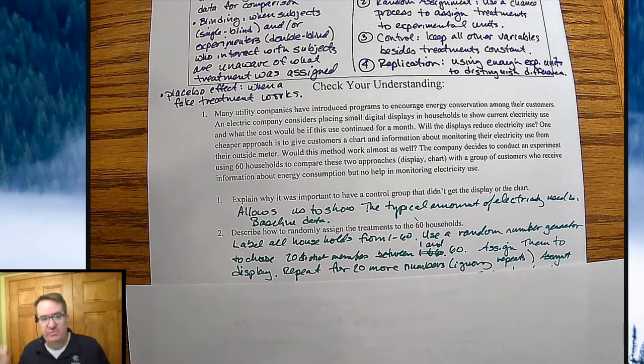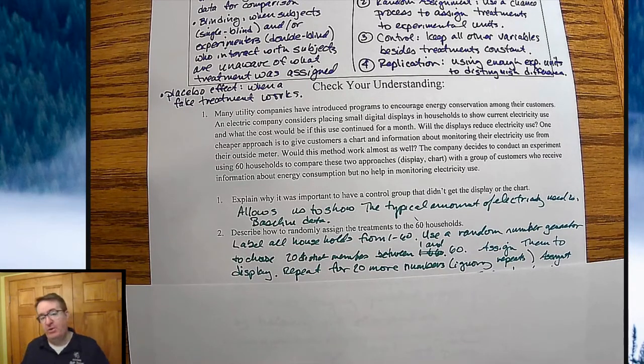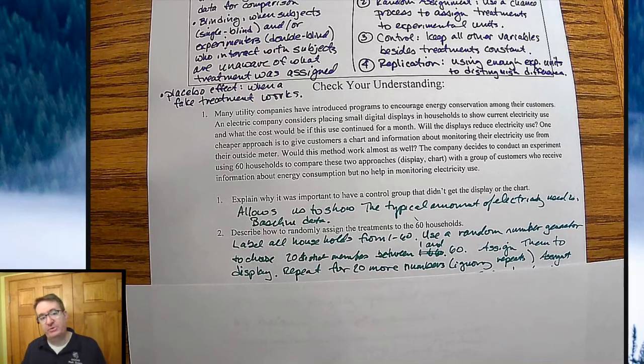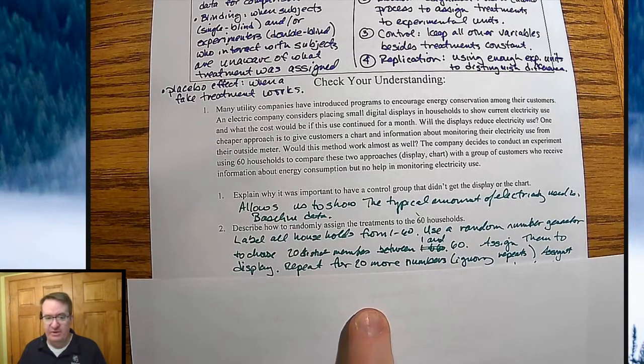The first 20 of those give to the display. Could I say the chart? Yes, it doesn't matter which one you pick first. I usually just go in the order so I don't miss anything. So the first 20 numbers, unique numbers that are chosen, those households are going to go into the just get the display for electricity use.